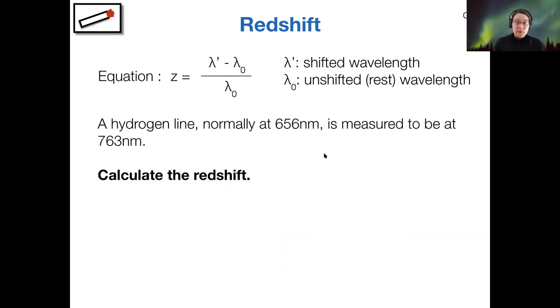All right. So let's actually put this into practice. You've done this kind of calculation before. So take a minute and type your answer into the chat. Don't hit send yet. But let's say that your hydrogen line is normally at 656 nanometers and you measure it from a source, and that line has shifted to 763 nanometers.